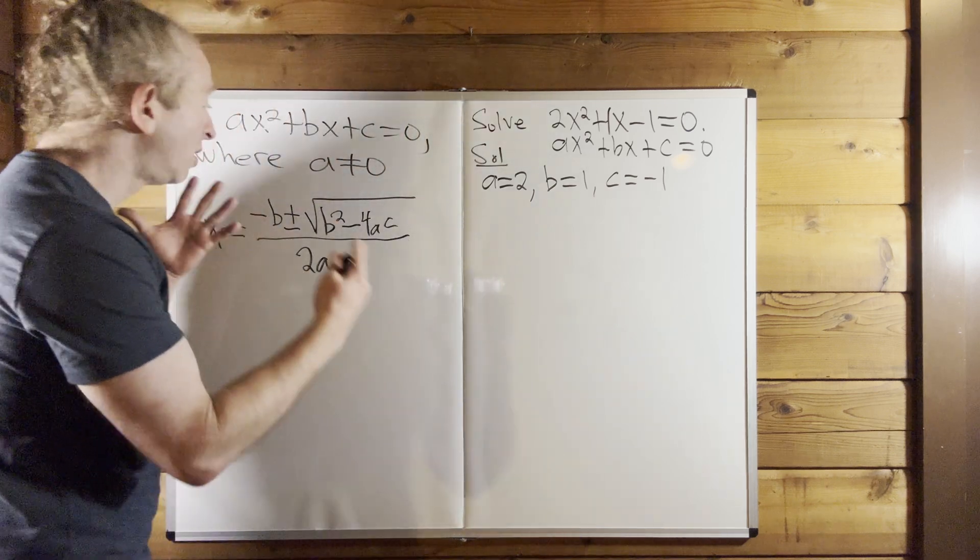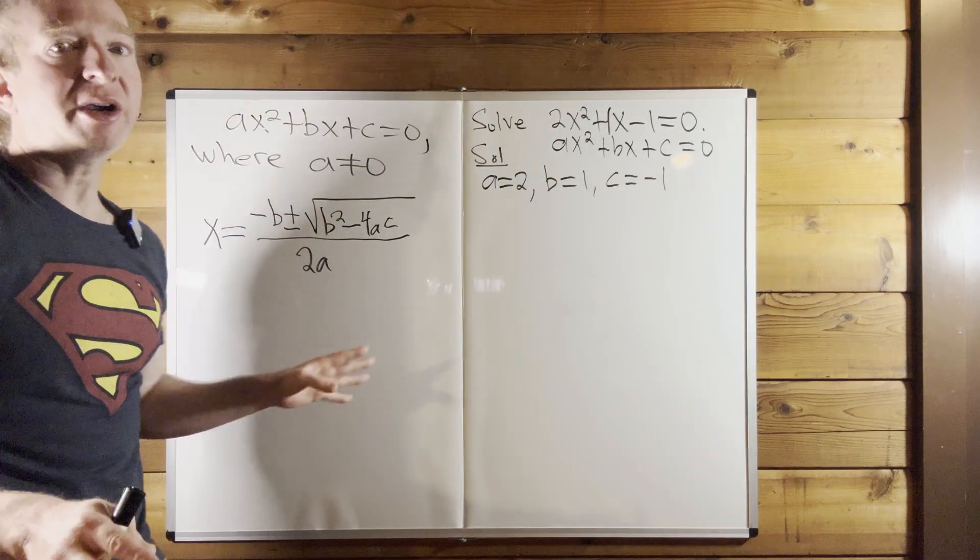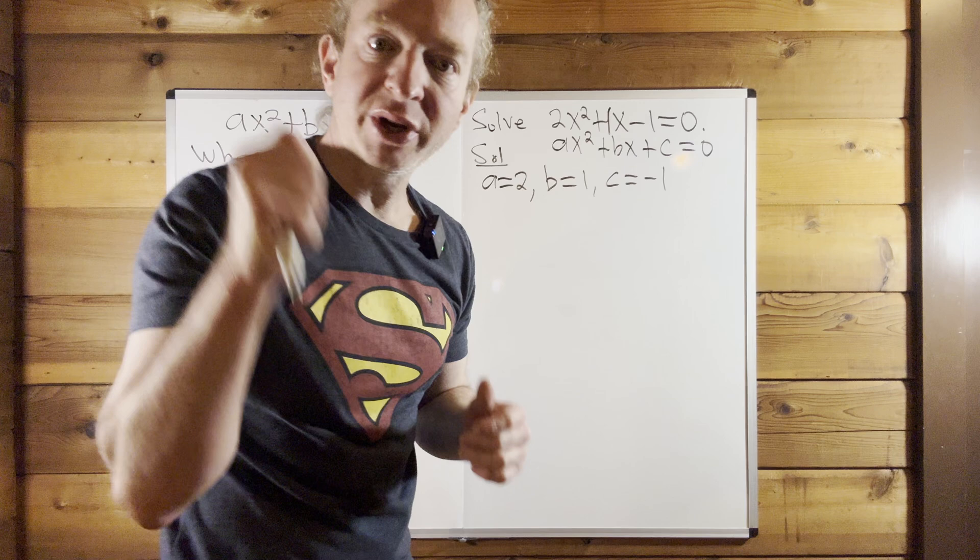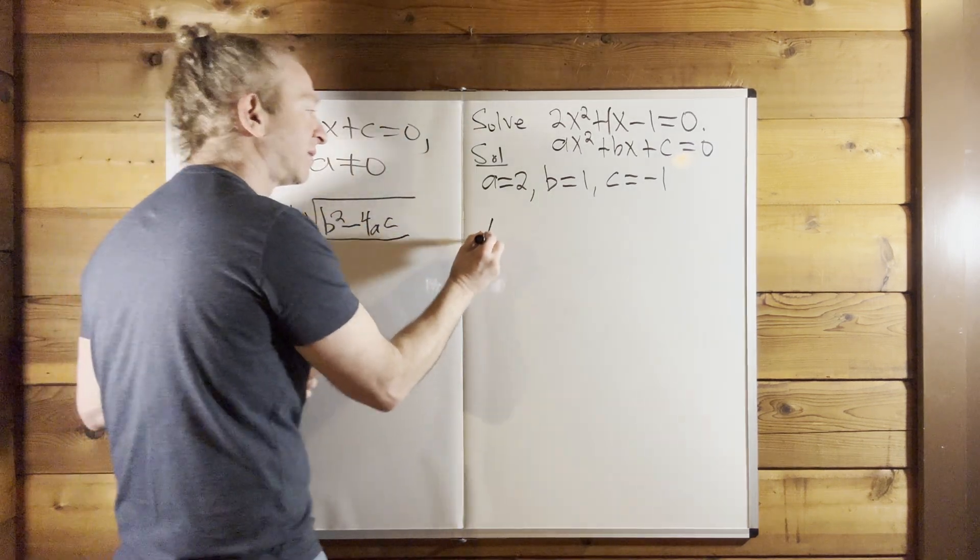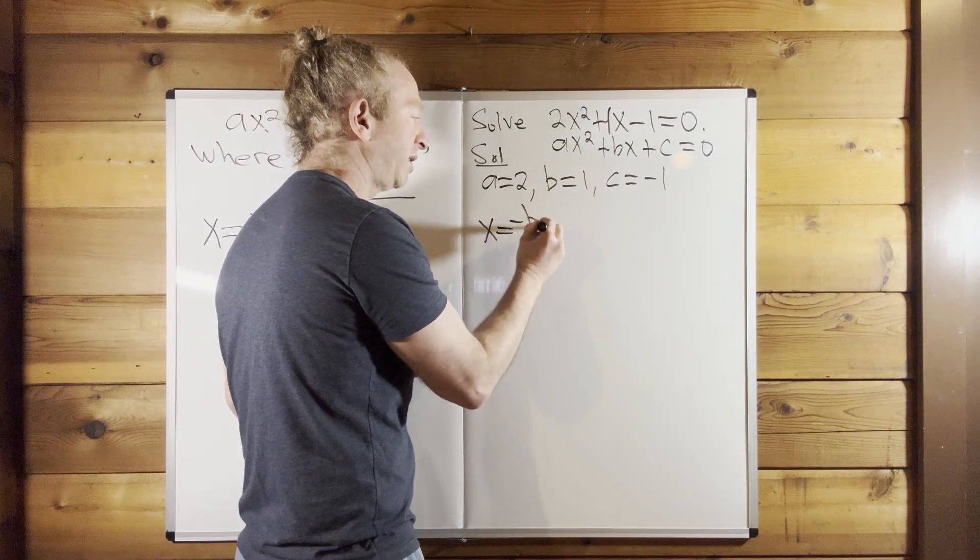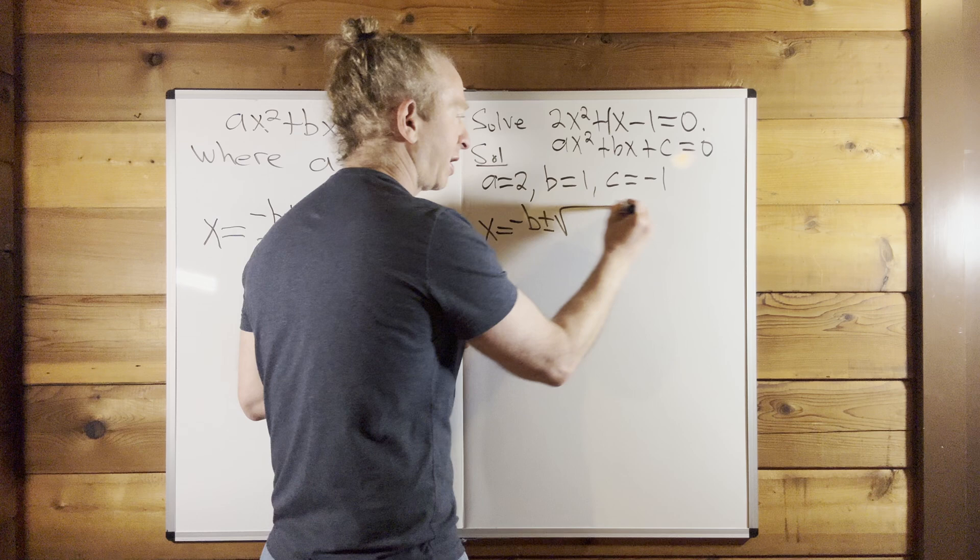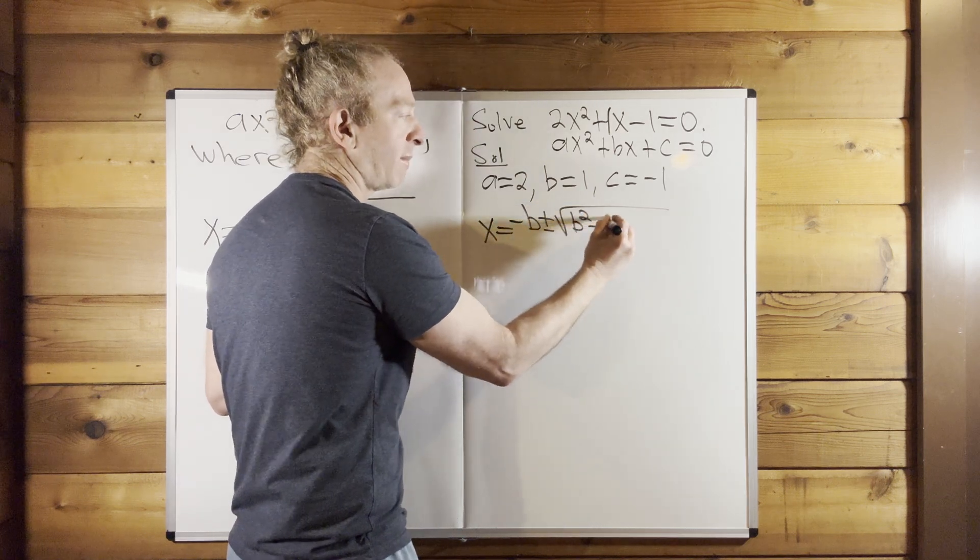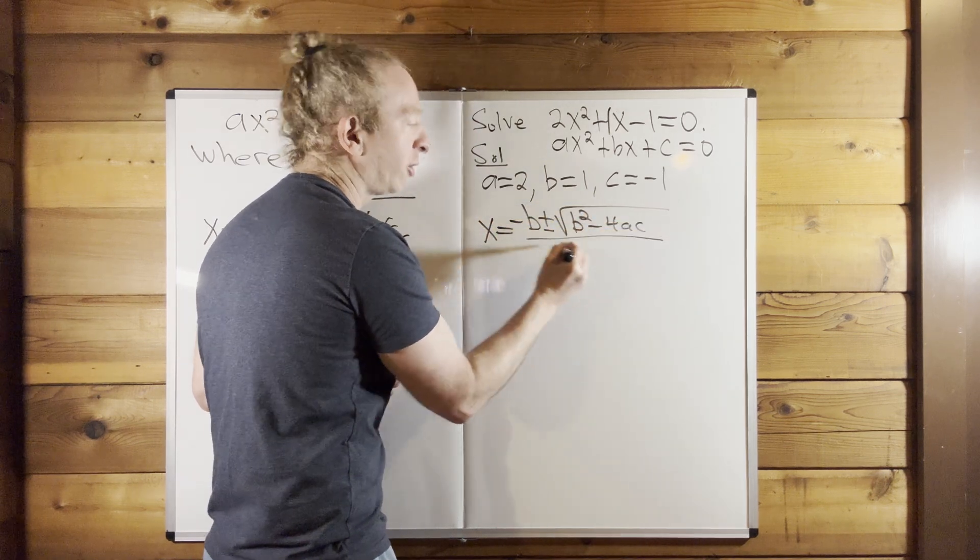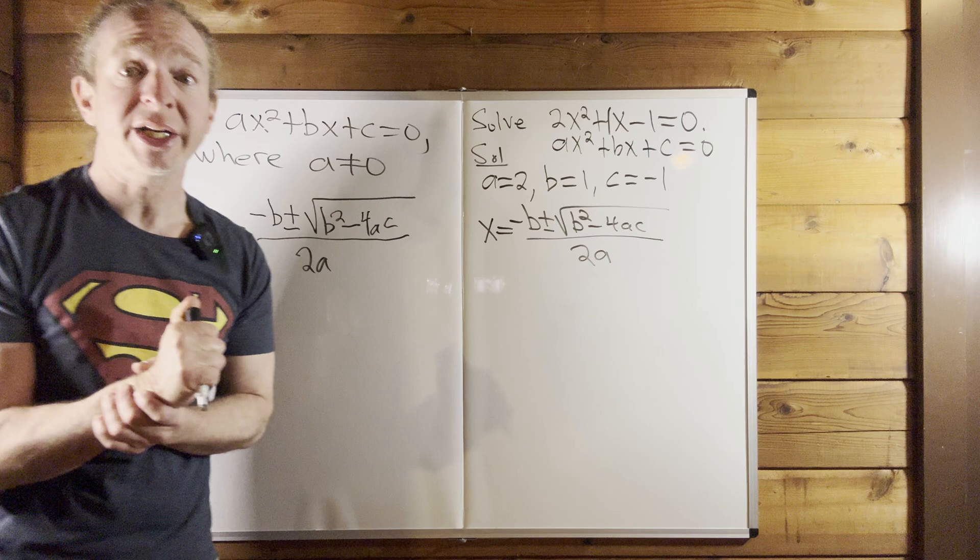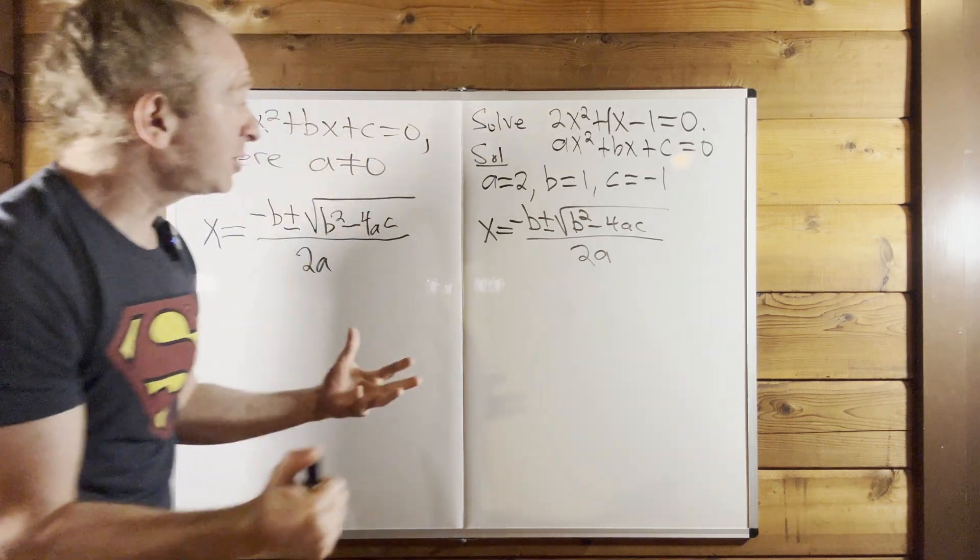You might say, well, wait a minute, you already wrote it down. Who cares, right? Write it down every single time, right? So x is equal to negative b plus or minus the square root of b squared minus 4ac all over 2a. Really nice, right? Really, really nice. So now we just plug everything in.